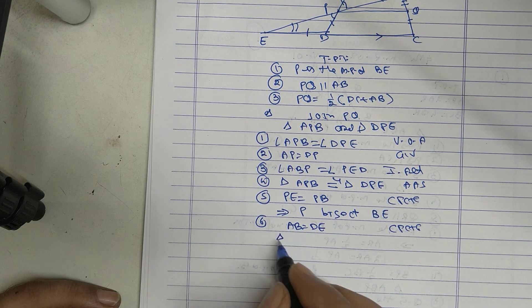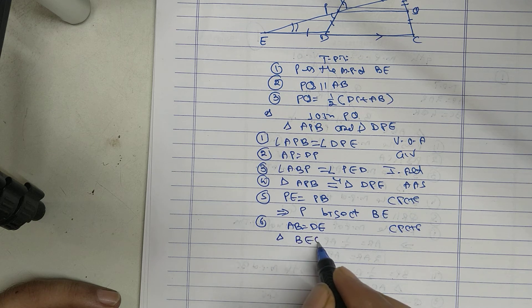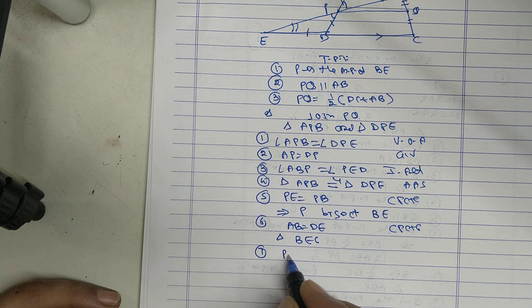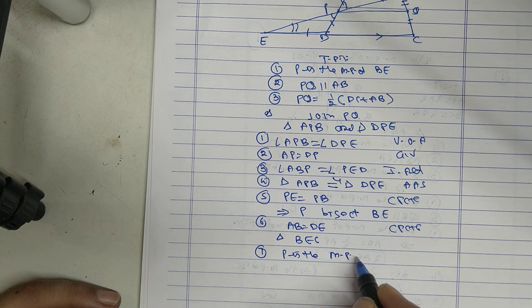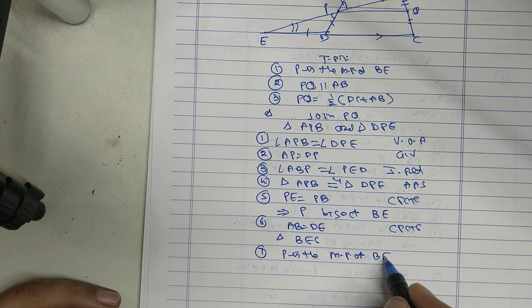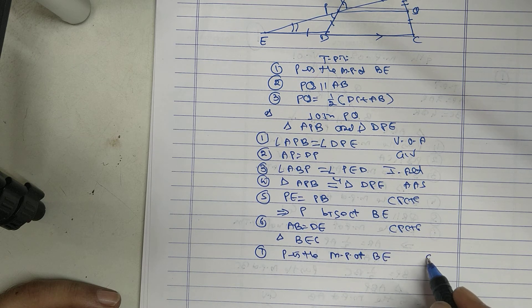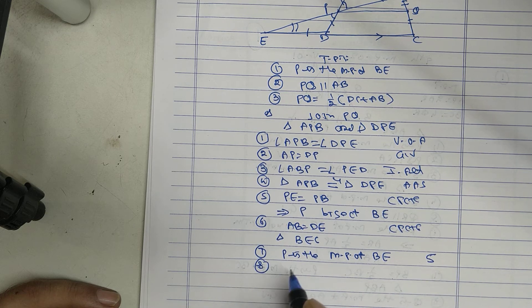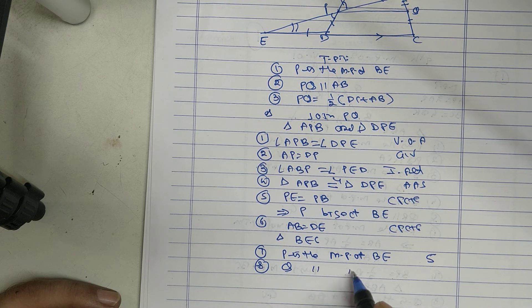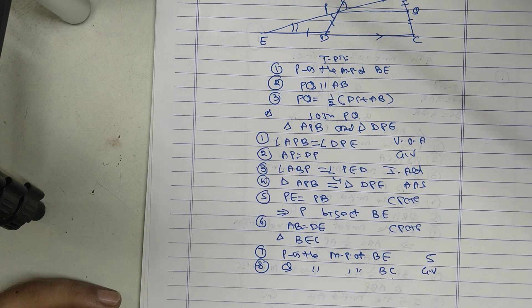Take triangle BEC. P is the midpoint of BE, we proved in statement 5. Q is the midpoint of BC, given.